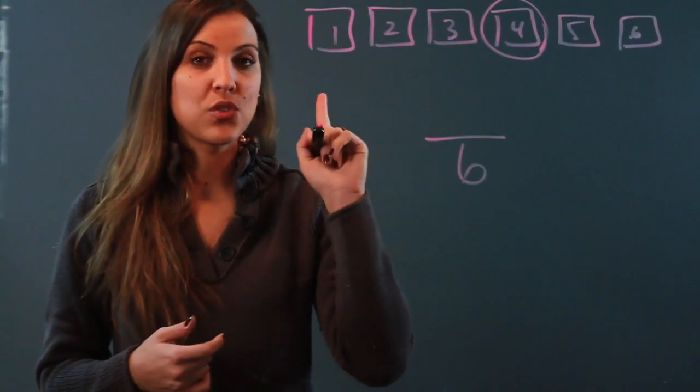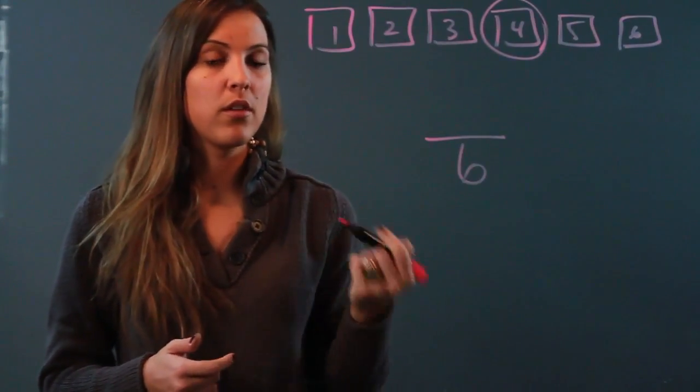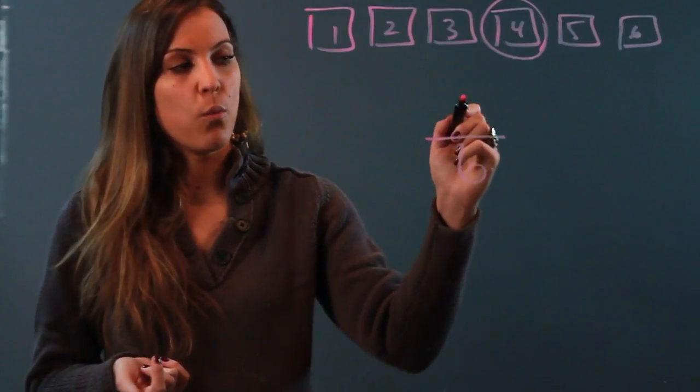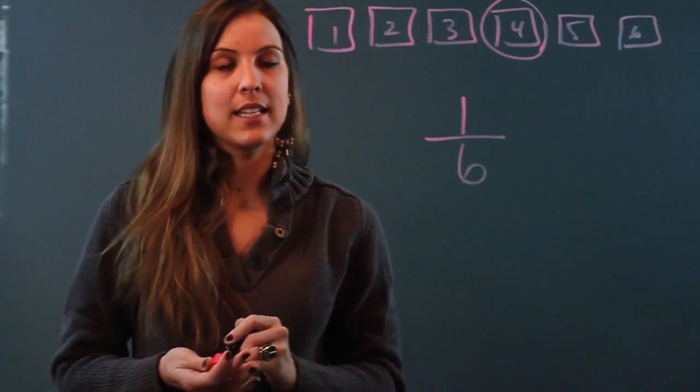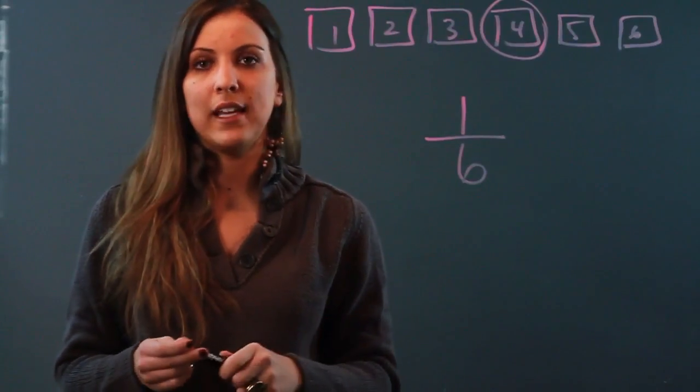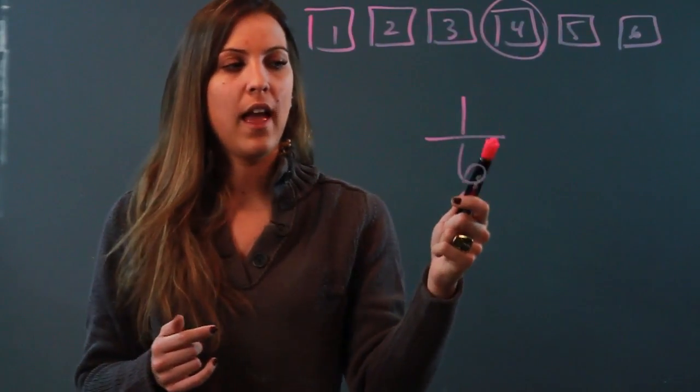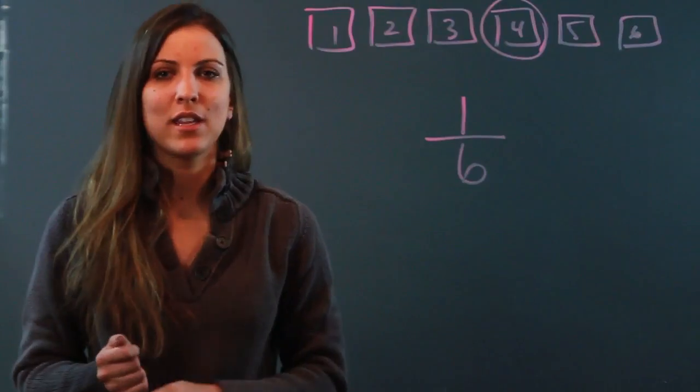So that means that there's only one possible number that's going to roll and satisfy your conditions. So 1 is what goes in the numerator, and the probability of rolling a dice and getting a number that is greater than 3 and less than 5 is 1 out of 6. That's how you find the probability.